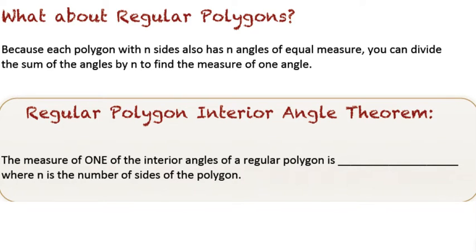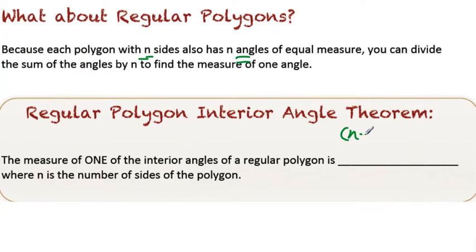So now we're going to talk about regular polygons. Regular polygons are polygons where all the sides are congruent and all the angles are congruent. They're the pentagons that look like pentagons, the octagon that looks like an octagon — all the sides are the same and everything is nice and symmetric. Because each polygon with N sides also has N angles, you can divide the sum of the angles by N to find the measure of one angle. The formula is (N-2) times 180, which tells you how many total degrees are on the inside.